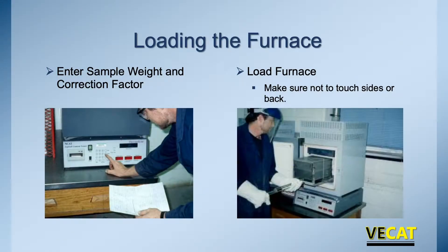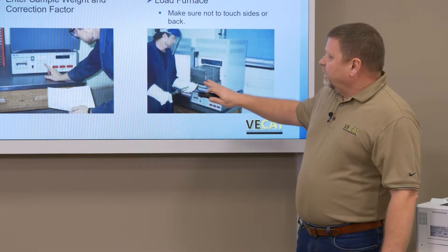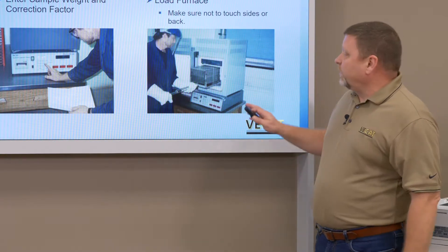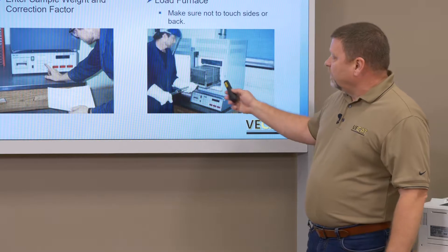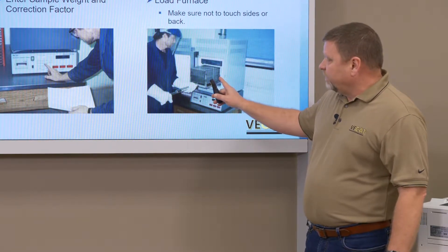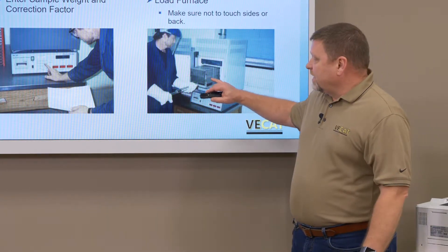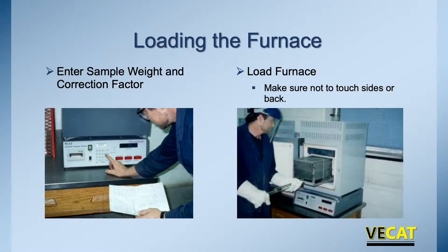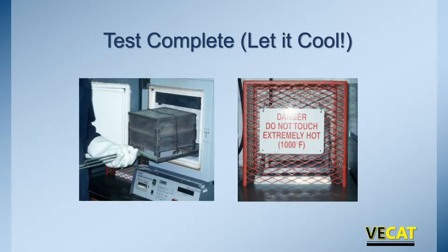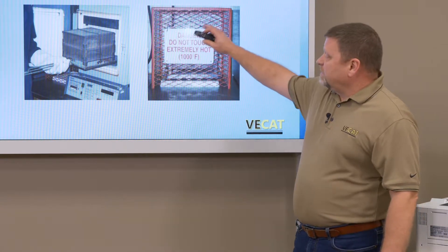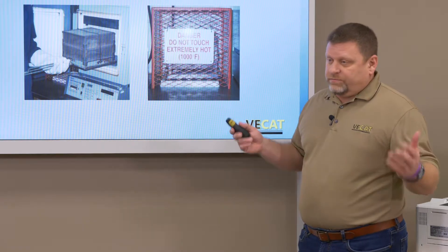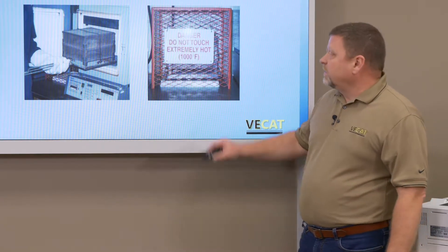When loading the furnace, enter the sample weight using the numerical pad, then load the furnace. The oven is a thousand degrees — you feel the heat immediately when you open it. Make sure the basket isn't touching the sides or back of the internal chamber, as contact can influence test results. The basket must be set right in the center on the weight platform. Once the sample is complete the furnace turns off automatically, then you hit stop to unlock the door. Once removed, cover the sample with the safety basket so no one gets burnt.